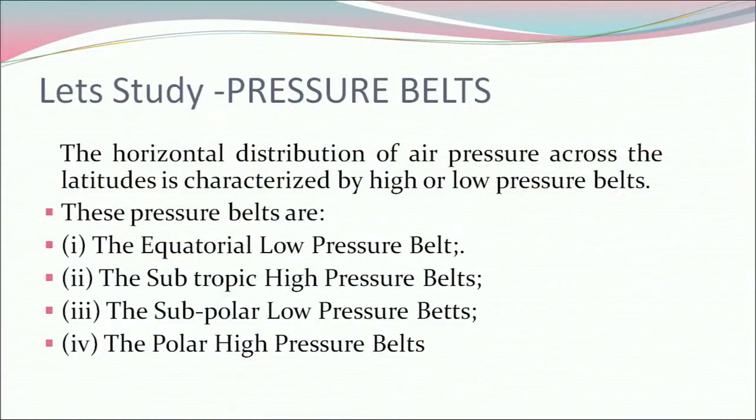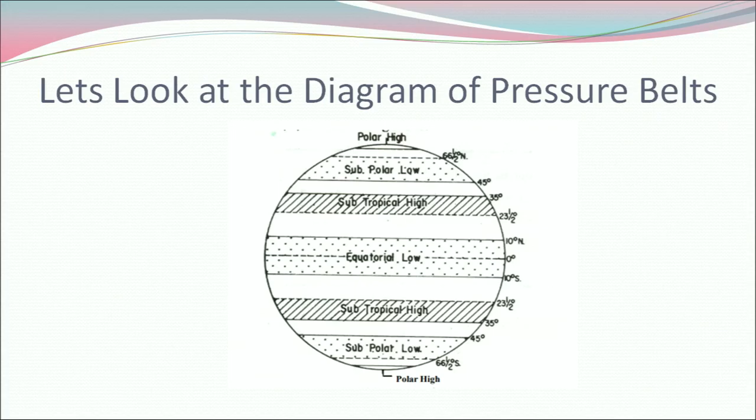Now let's study the pressure belts. Horizontal distribution of air pressure across latitudes is characterized by high or low pressure belts. These pressure belts are: the equatorial low pressure belt, the subtropical high pressure belts, the subpolar low pressure belts, and the polar high pressure belts. Now let's have a look at the diagram of pressure belts.